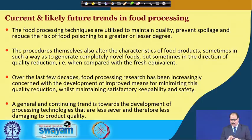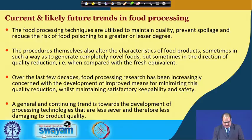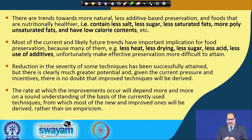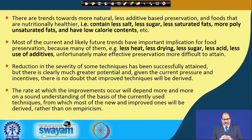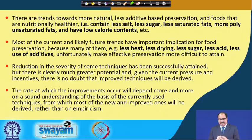A general and continuing trend is towards the development of processing technologies that are less severe and therefore less damaging to product quality. There are trends towards more natural, less additive-based preservation, and foods that are nutritionally healthier — containing less salt, less sugar, less saturated fats, more polyunsaturated fats and having low calorie intake. Most of these current trends have important implications for food preservation because many of them — for example less heat, less drying, less sugar, less acid, less use of additives — unfortunately make effective preservation more difficult to attain.